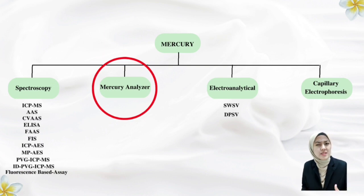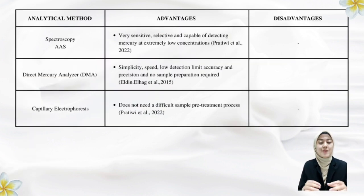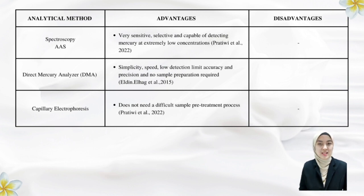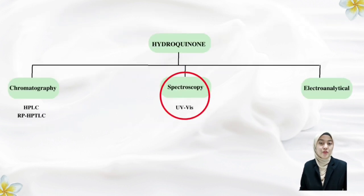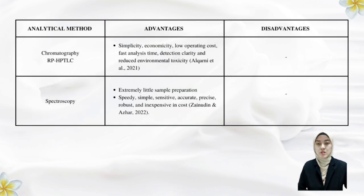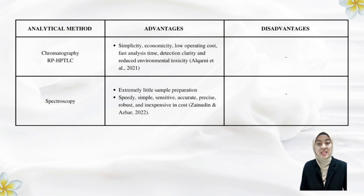Even though capillary electrophoresis does not need a difficult sample pre-treatment process, direct mercury analyser is a suitable analytical method to analyse mercury over other methods due to its simplicity, speed, low detection limit, accuracy, precision, and no sample preparation required. For hydroquinone, UV-Vis spectrophotometric technique is used rather than chromatography due to the benefit of demanding extremely little sample preparation, and has been proven to be practically speedy, simple, sensitive, accurate, precise, robust and inexpensive.